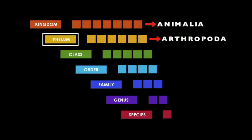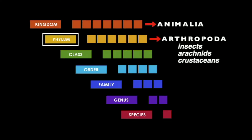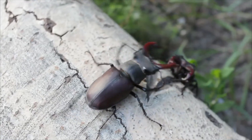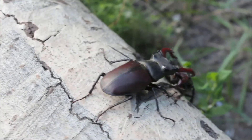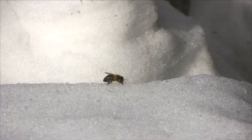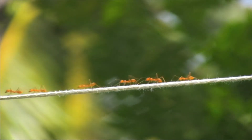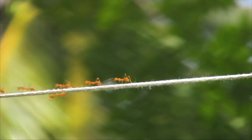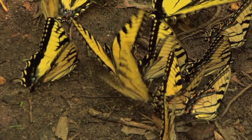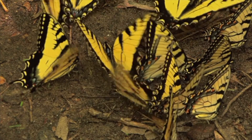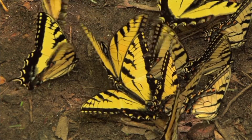The largest phylum is Arthropoda, which includes all insects, arachnids, and crustaceans. Arthropods are the most successful of all animal groups — they are found in every environment, and there are over 1 million insect species alone. All arthropods have jointed exoskeletons and bilateral symmetry, where the right half of the body is a mirror of the left half.